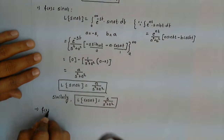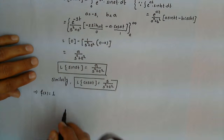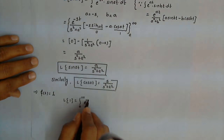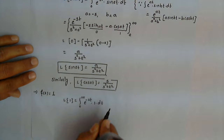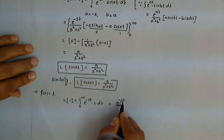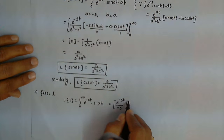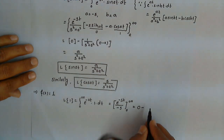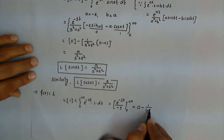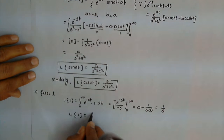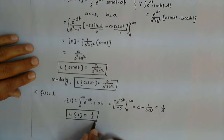Consider the constant function f(t) equals 1. By definition, the Laplace transform of 1 is the integral from 0 to infinity of e raised to minus s t times 1 dt. This integrates to e raised to minus s t upon minus s, evaluated from 0 to infinity. For the upper limit, e raised to minus infinity is 0. For the lower limit, t equals 0 gives e raised to 0, which is 1 upon minus s. This gives us 1 over s. Therefore, the Laplace transform of 1 is 1 over s.